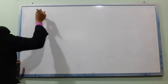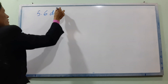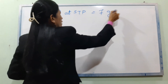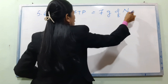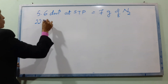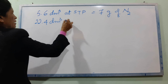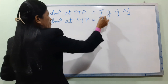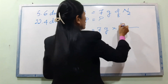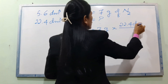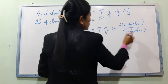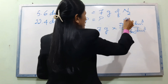Question 5: The volume of 7g of Nitrogen at STP. 7g of Nitrogen divided by 28 g/mol, multiplied by 22.4 dm³, gives 5.6 dm³ at STP.